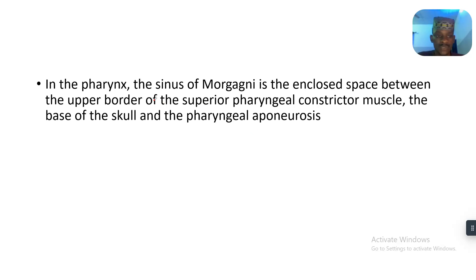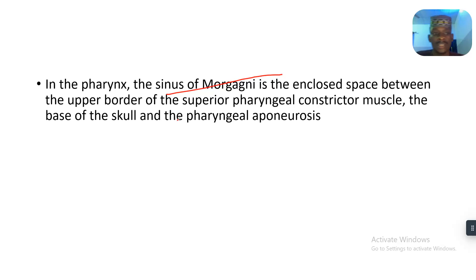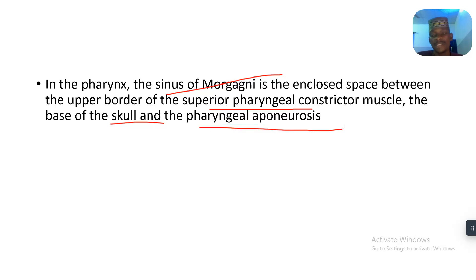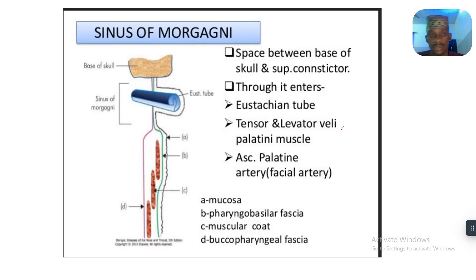Just an overview — in the pharynx, the sinus of Morgagni is the enclosed space between the upper border of the superior pharyngeal constrictor muscle and the base of the skull, and the pharyngeal aponeurosis.